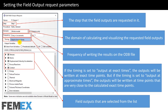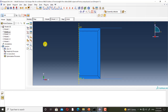If timing is set to output at approximate times, outputs will be written at time points that are very close to the calculated exact time points. Field outputs must be selected from the list. Now I want to show you the edit field output request in Abaqus. In the step module, I click on field output manager.